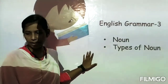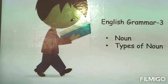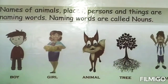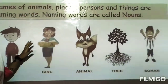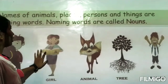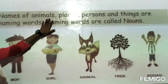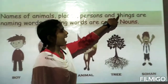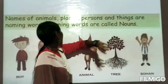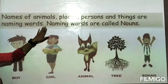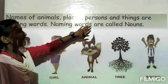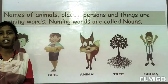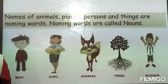The names of animals, places, persons and things are called naming words. Naming words are called nouns. In grammar, nouns are known as naming words.